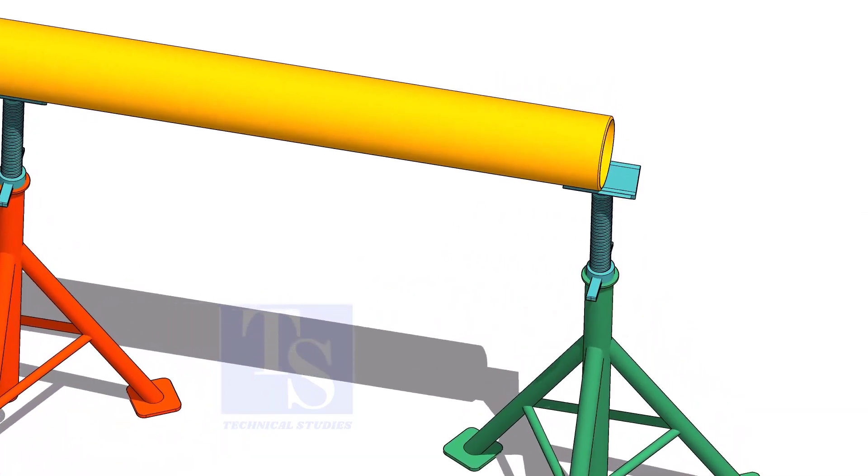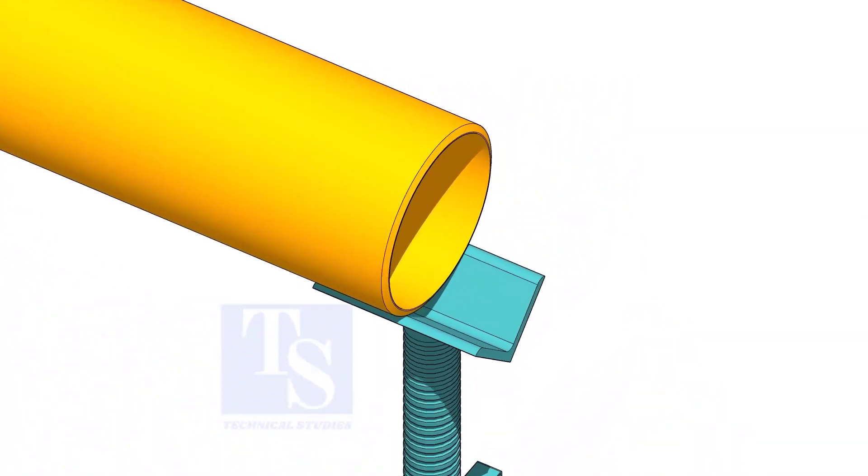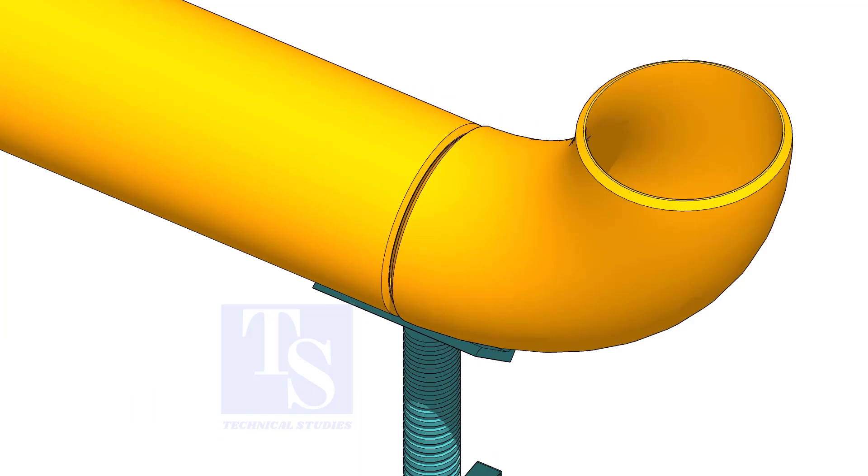Put the pipe on stands and level it. Put the elbow and the gap rod. Correct the overlap and tack weld on both sides.